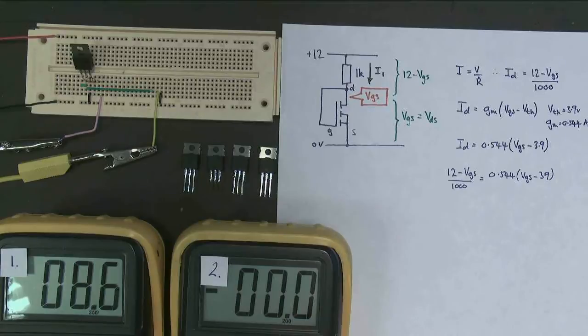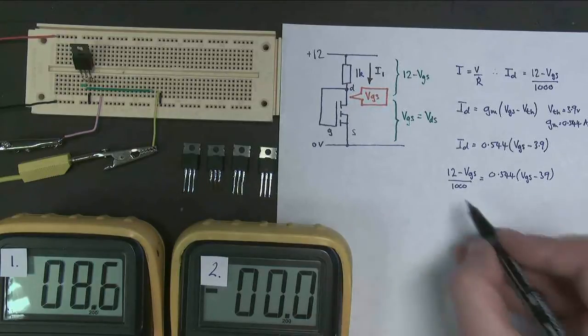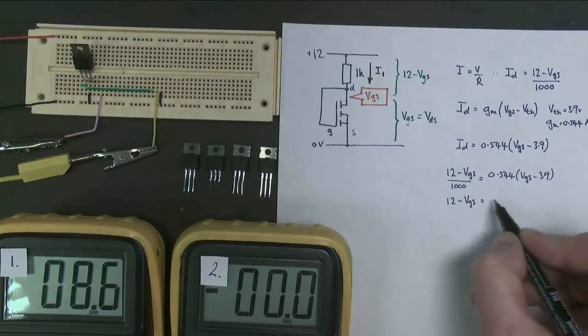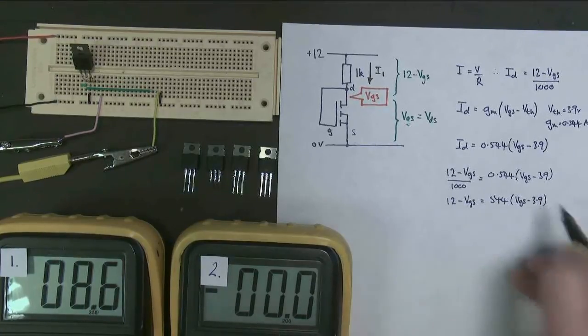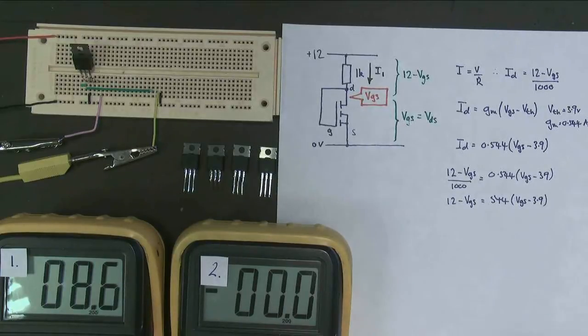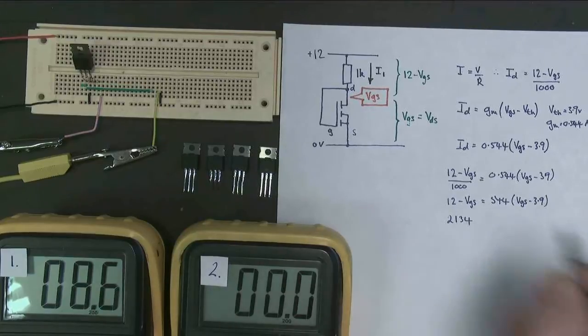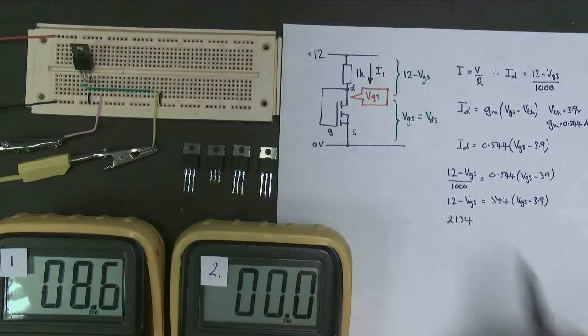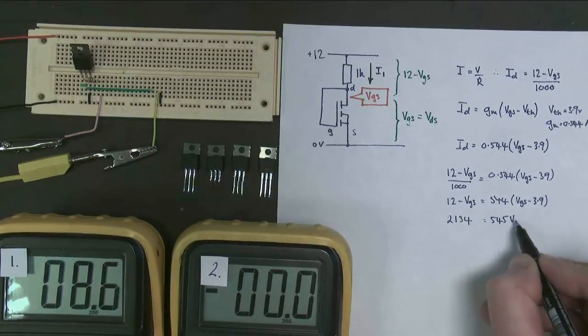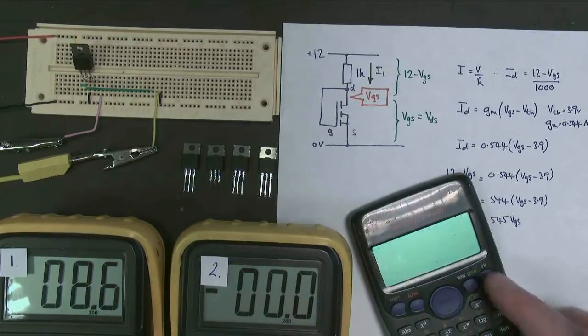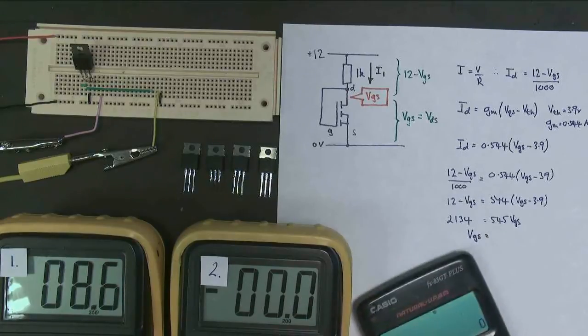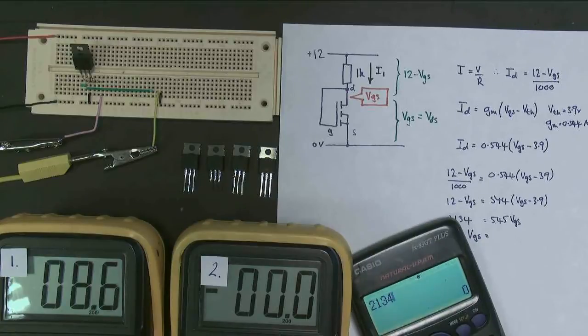And then we should be able to solve that. I won't insult your intelligence by doing it in too few steps. So we get 12 minus VGS equals 544 VGS minus 3.9. And therefore, when we actually solve that, we get 2,134. That's that multiplied by that and brought over this side and added to 12 equals 545 VGS. That one came over to this one. So VGS, if we get our calculator out, it's going to come out as something reasonable, hopefully. So it's going to be 2,134 divided by 545 equals 3.916.